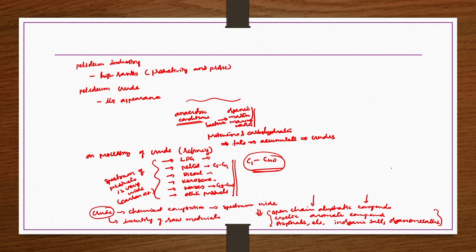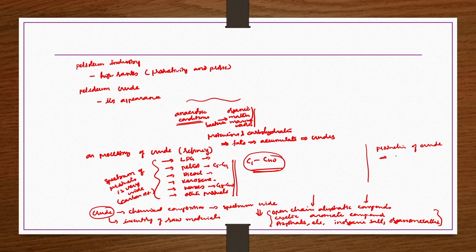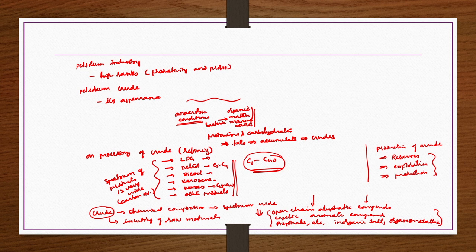We concluded the previous lecture with the production of crude. The production of crude is very important because how effectively you extract the crude determines your profit. Extracting crude efficiently involves a lot of scientific technology. We looked at basics such as reserves, exploration techniques, and production techniques, then concluded the lecture. Now today we start with petroleum refinery products.